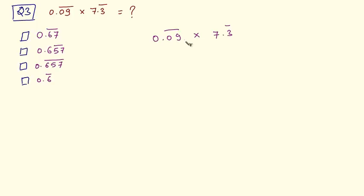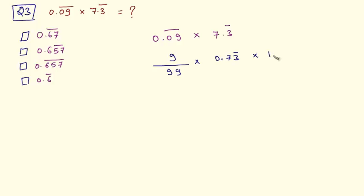The number of recurring digits after the decimal point is 2 in the first term. So the denominator is 99 because we have 2 recurring digits. In the numerator we write the number without the decimal point as it is, so we have 9. We cannot directly convert the second term — we have to write it as 0.73 in which 3 is recurring, times 10. Now we can convert this into a simple fraction. Here the number of recurring digits is 1 and the number of non-recurring digits is 1.